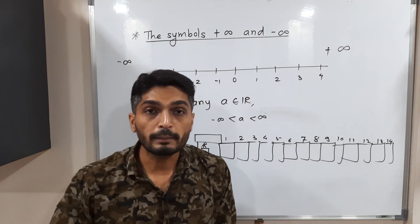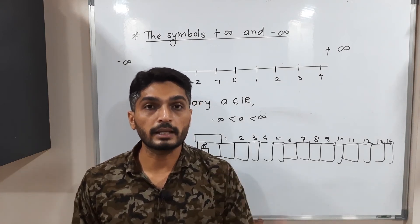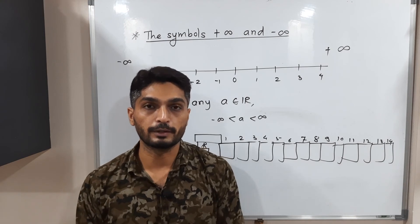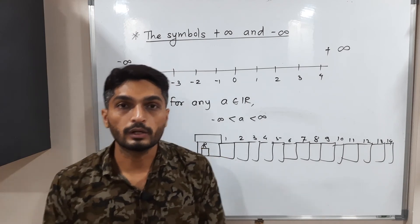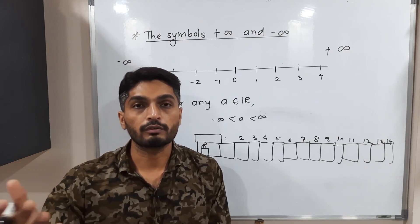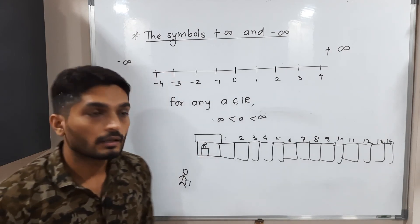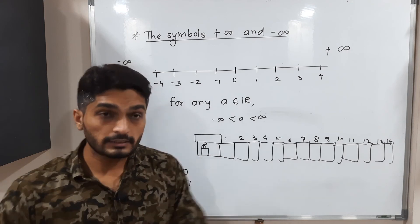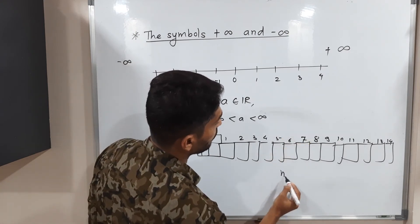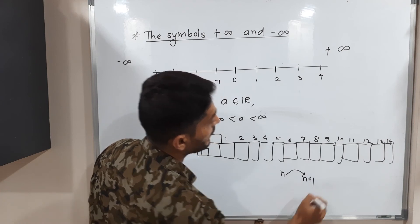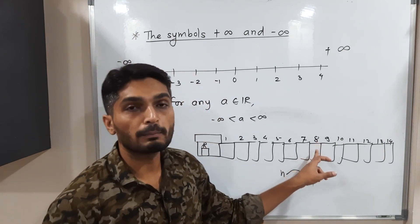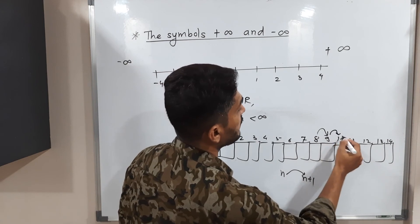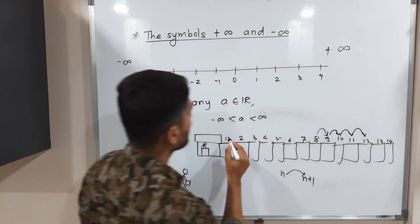You can pause the video, think about it for five or ten minutes, and then continue. The answer: the owner announces that the guest in room number n must shift to room number n+1. So the guest in room 1 shifts to room 2, room 2 shifts to room 3, room 3 to room 4, and so on.